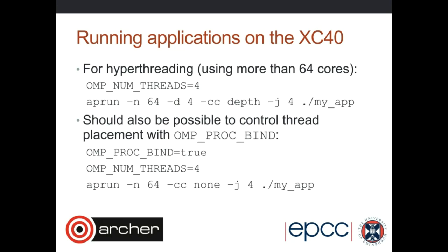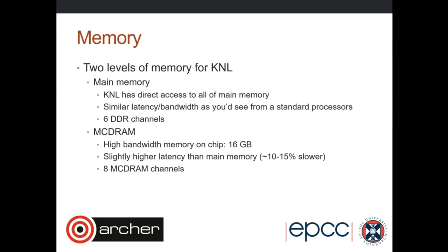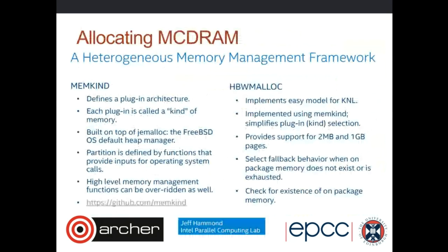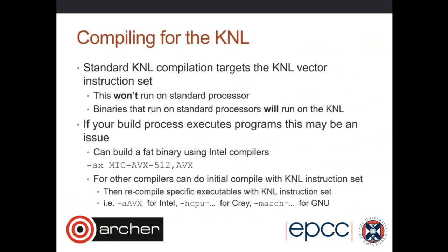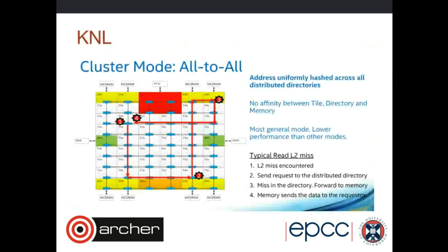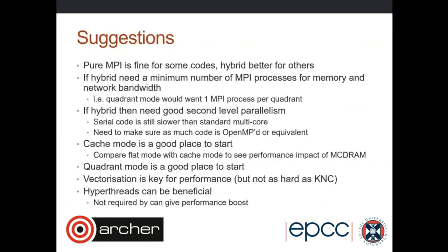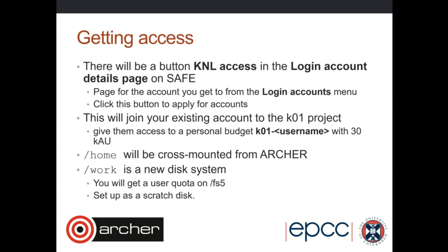A standard MPI job should do something sensible - it won't put the first four MPI processes on the first physical core. This numbering is what the job submission system and job launcher see. The further physical cores are numbered 0 to 63, and beyond that it goes into the hyperthreads. On normal Archer nodes, we have 24 cores per node numbered 0 to 23 for physical cores and 24 to 47 for hyperthreads. If you attempt specific binding using a particular CPU, this is the numbering scheme.